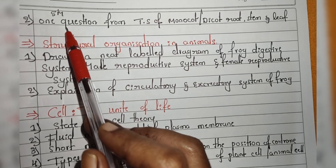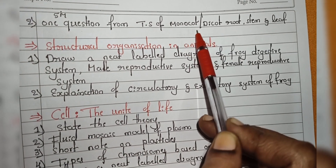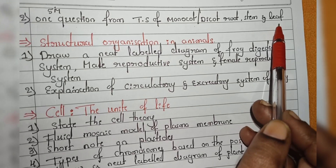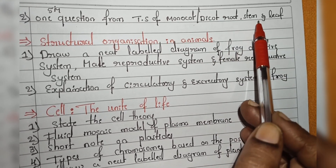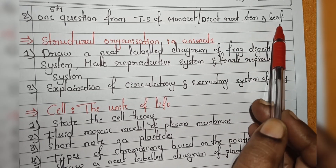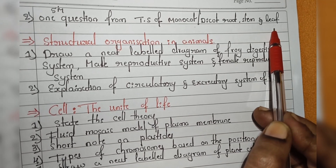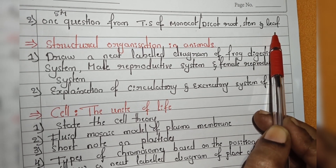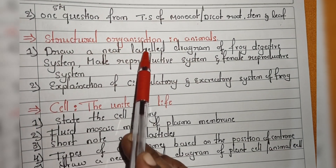There is one fixed question from this chapter — the tissues of monocot or dicot root, stem, or leaf. From dicot root, stem, leaf or monocot root, stem, leaf, they will ask any one question. They may ask at the description level or ask for a diagram.